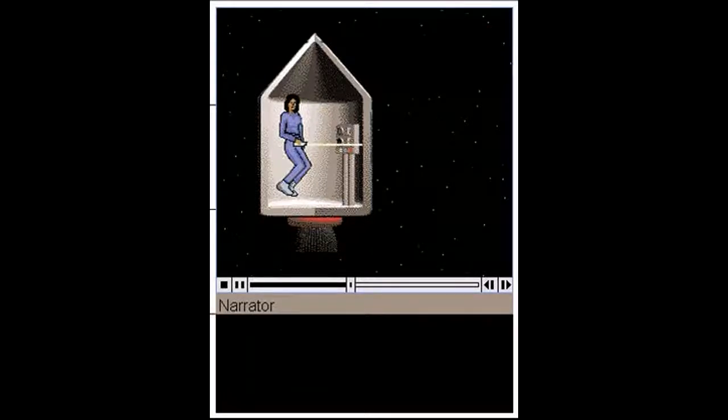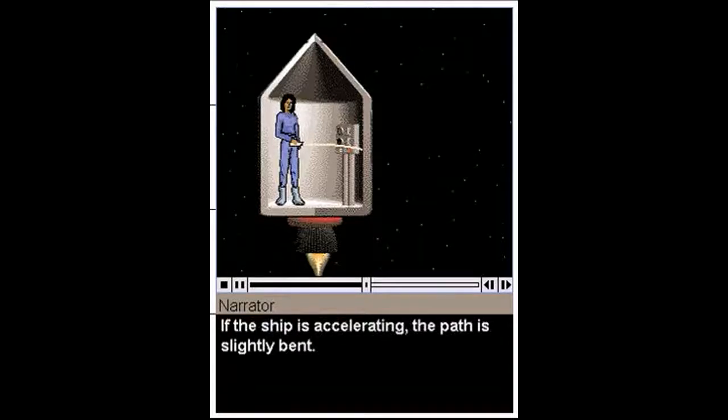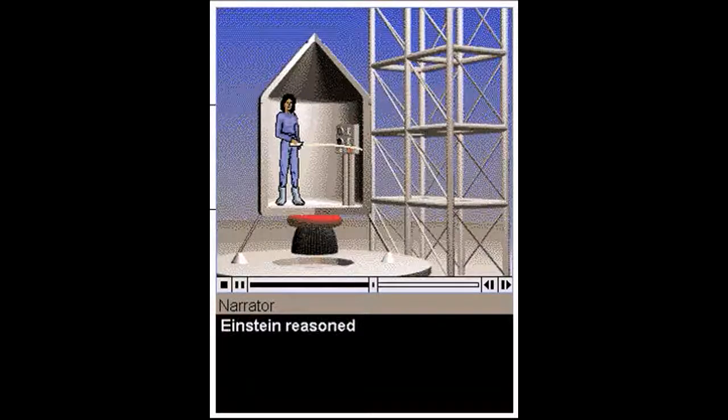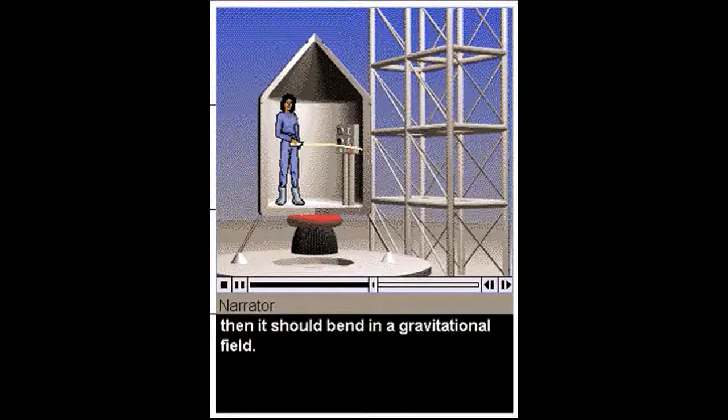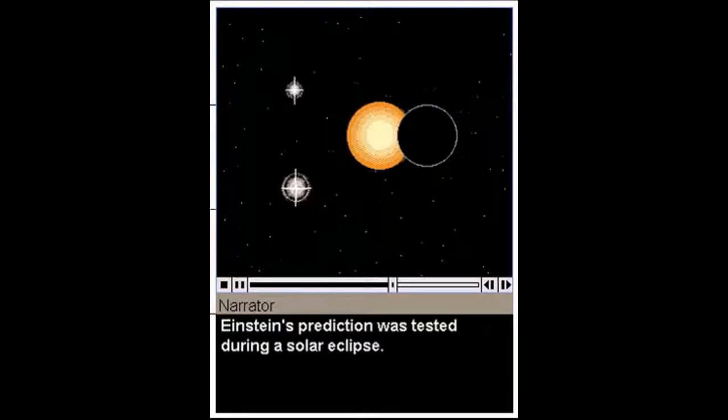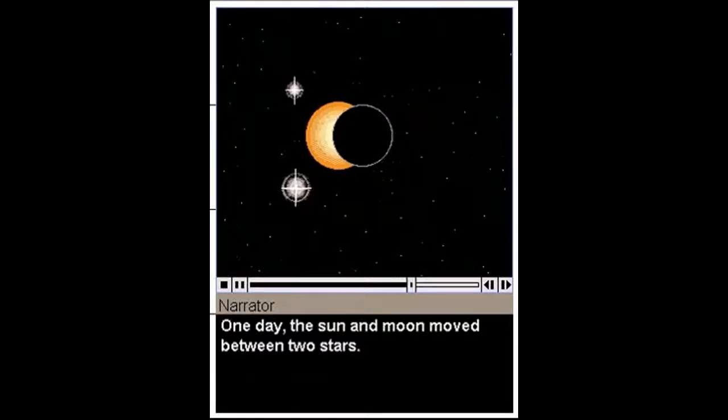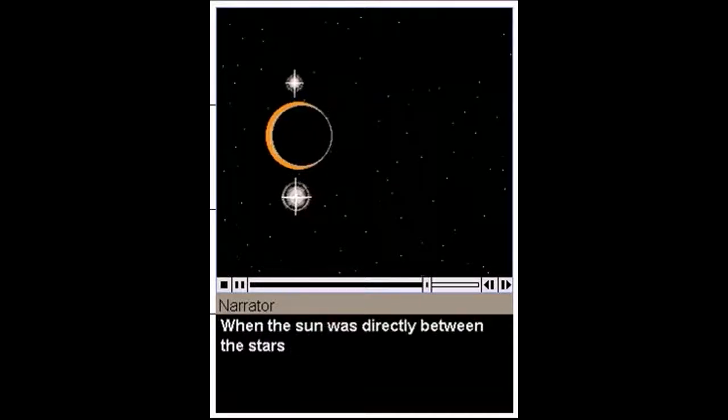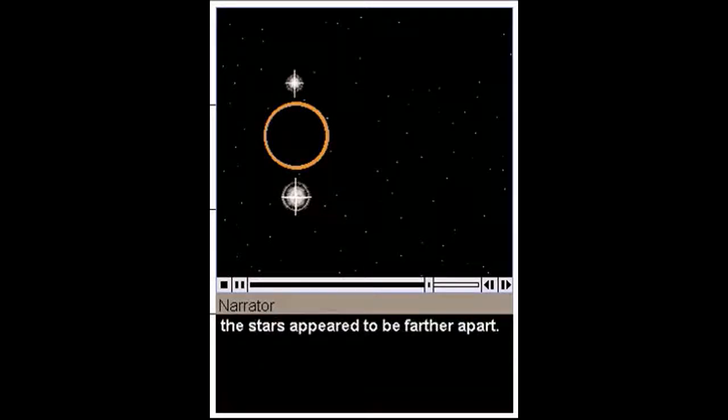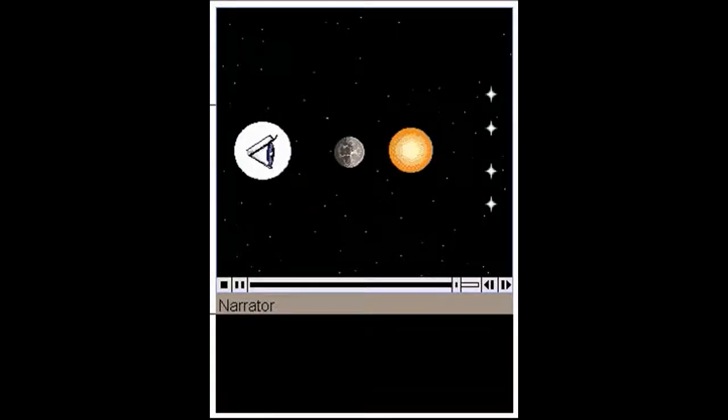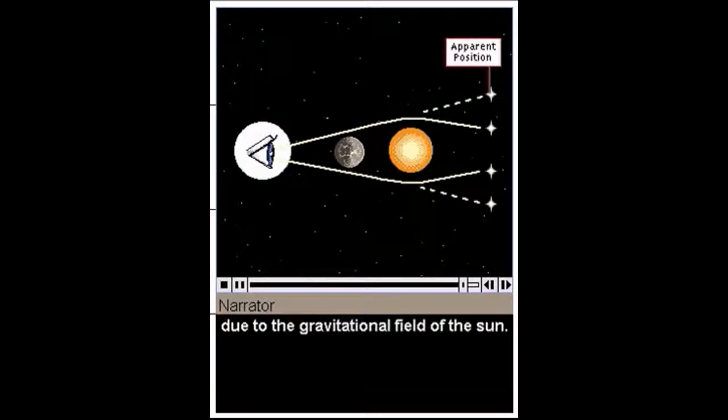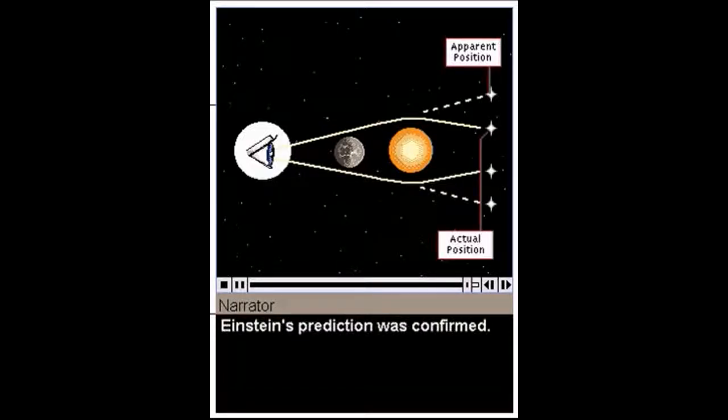Now, the astronaut does another experiment with light. If the ship is not accelerating, the light beam follows a straight path. If the ship is accelerating, the path is slightly bent. Einstein reasoned that if light appears to bend in an accelerating frame of reference, then it should bend in a gravitational field. Einstein's prediction was tested during a solar eclipse. One day, the Sun and Moon moved between two stars. When the Sun was directly between the stars and its light was blocked by the Moon, the stars appeared to be farther apart. Rays of light from the stars were bent due to the gravitational field of the Sun. Einstein's prediction was confirmed.